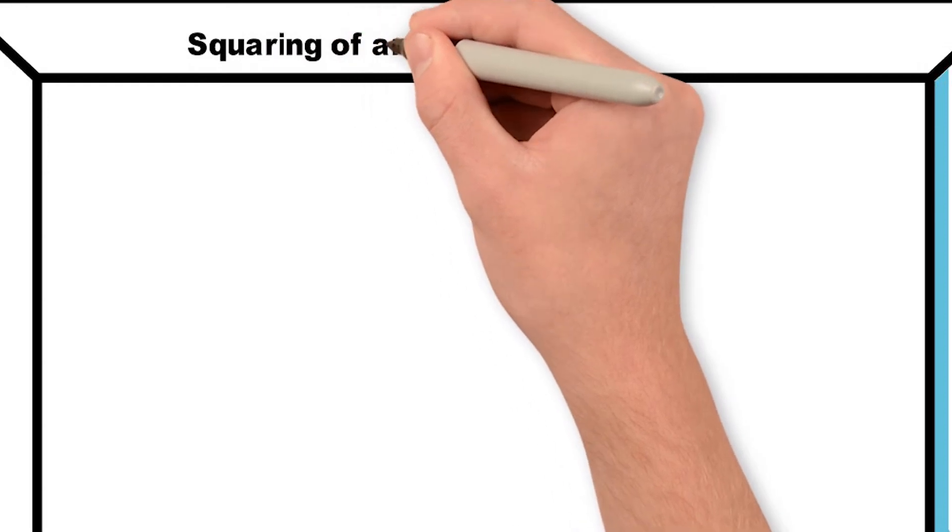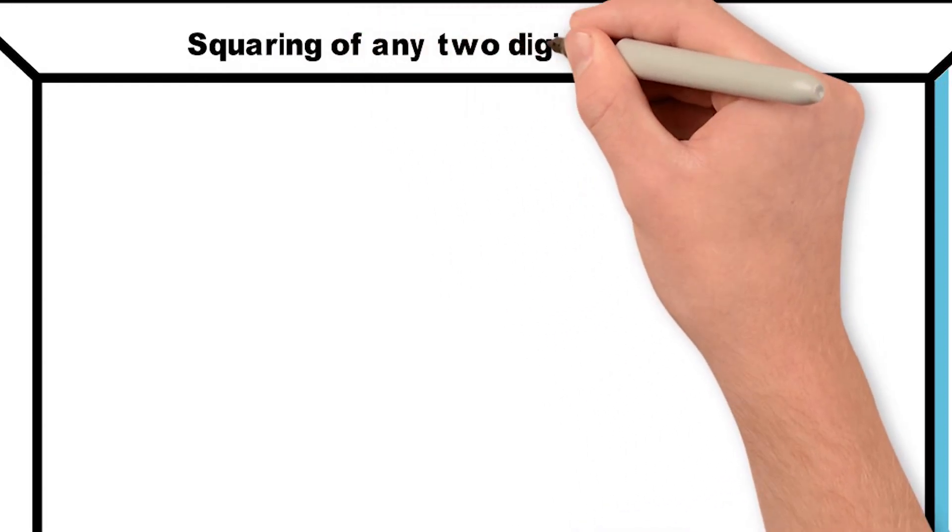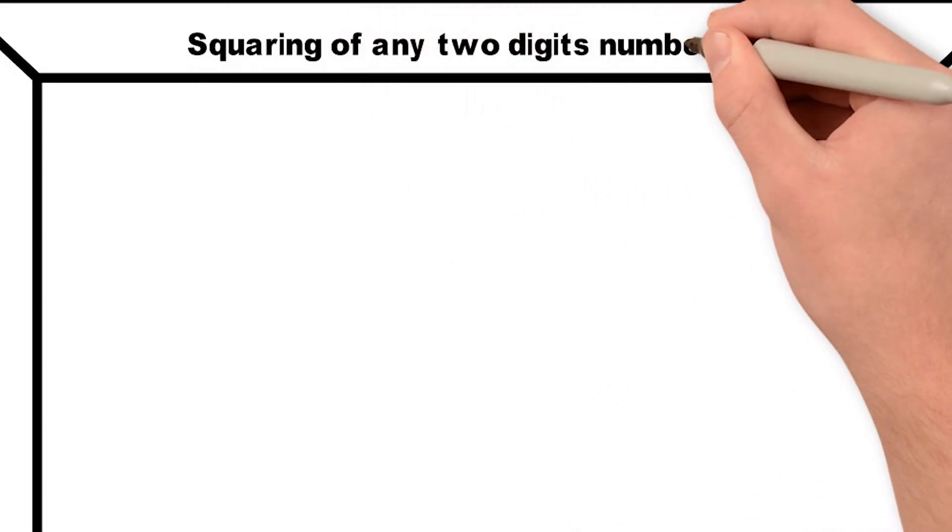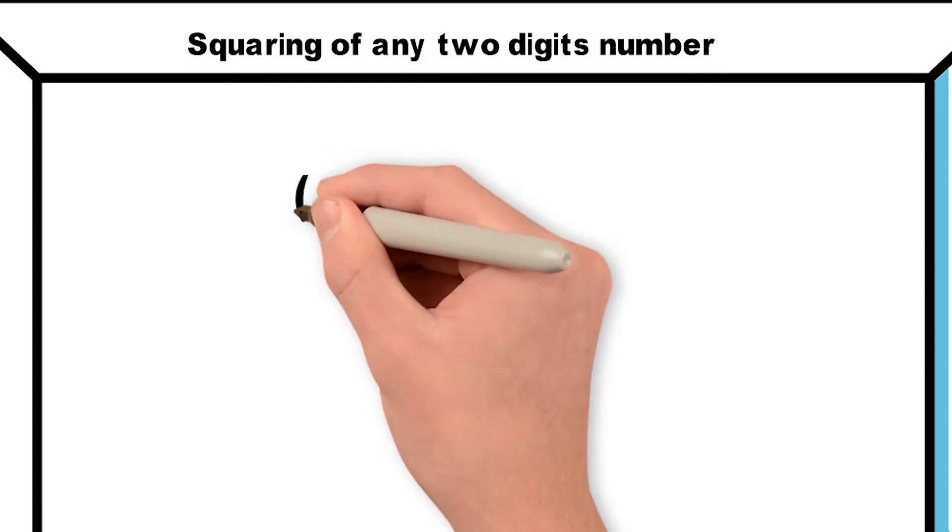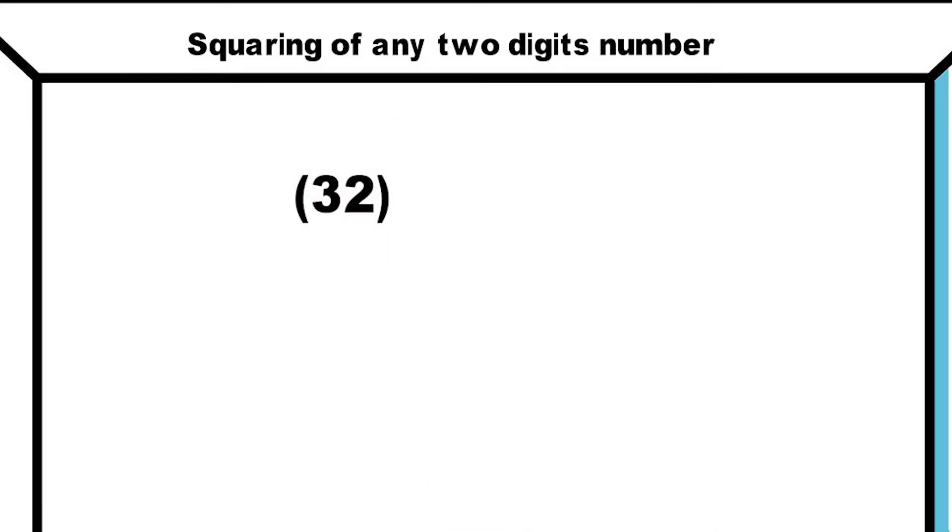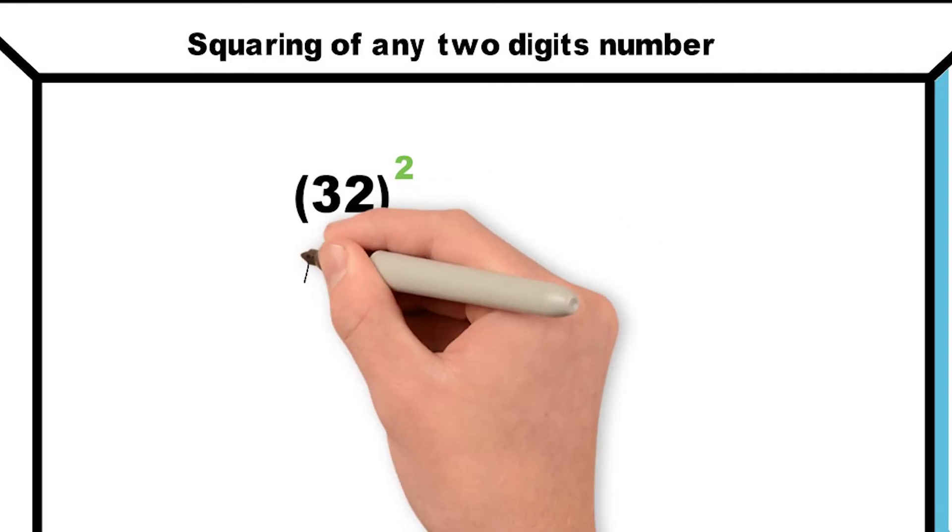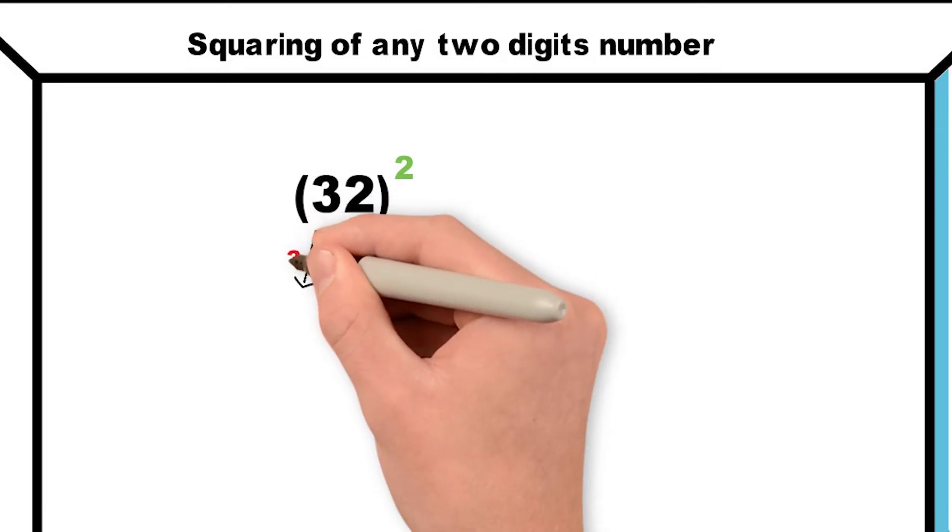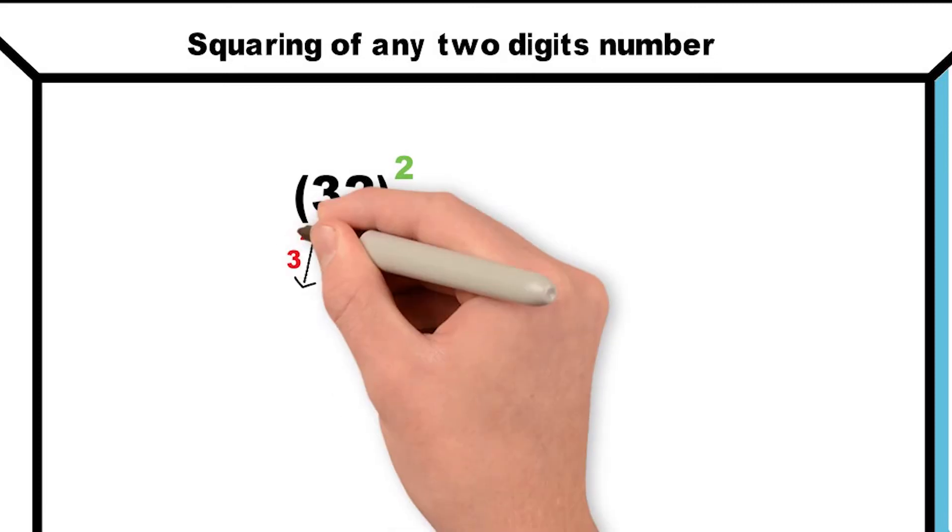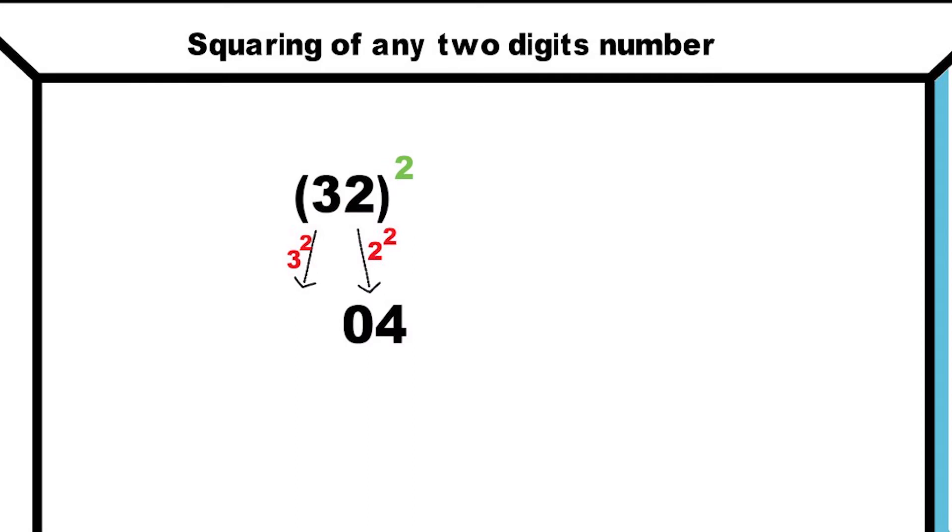Here we are going to solve squaring of any two-digit number. Let's take one example: 32 whole square. As we done earlier, we will square the unit place digit, that is 2 square, which is 04. After that, we will square the tens place digit. 3 square is 09.